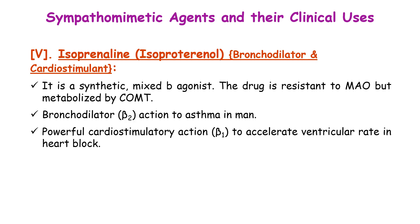Isoproterenol, also called isoprenaline, is a synthetic mixed beta agonist acting on both beta-1 and beta-2 receptors. It is a bronchodilator via beta-2 and a cardiostimulant via beta-1. Unlike the endogenous catecholamines, it is resistant to MAO (monoamine oxidase) but is metabolized by COMT (catechol-O-methyltransferase). It is used for asthma in humans and has a powerful cardiostimulatory action via beta-1 to accelerate ventricular rate in heart block.